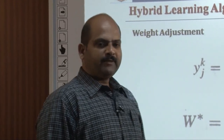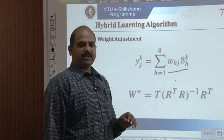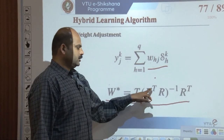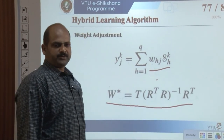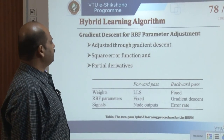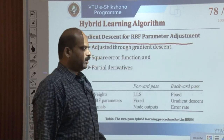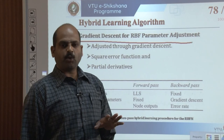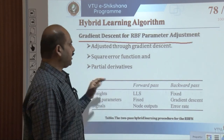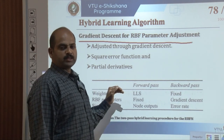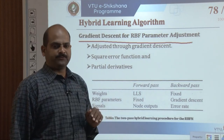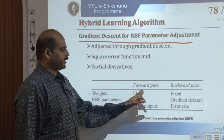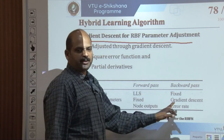The hybrid learning algorithm model uses a two-path hybrid learning procedure. Given input z_i, the signal from output neuron j is: y_j^k = sum_{h=1}^{Q} w_{jh} * phi_h(z_i). The optimal weight matrix is obtained as w* = (R^T * R)^{-1} * R^T * T. The parameters of the RBF neurons are adjusted through gradient descent with a standard squared error function. Descent functions are derived by taking partial derivatives of the error with respect to the centers and spreads of the RBFs. The training procedure operates with forward and backward passes.